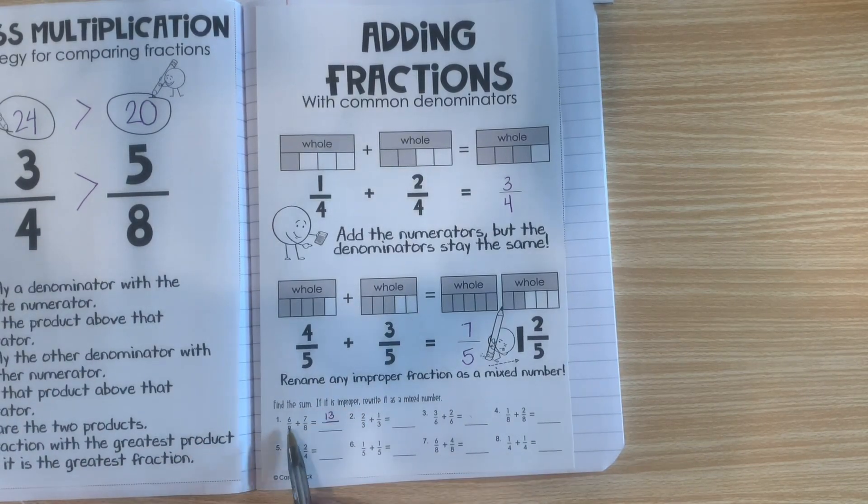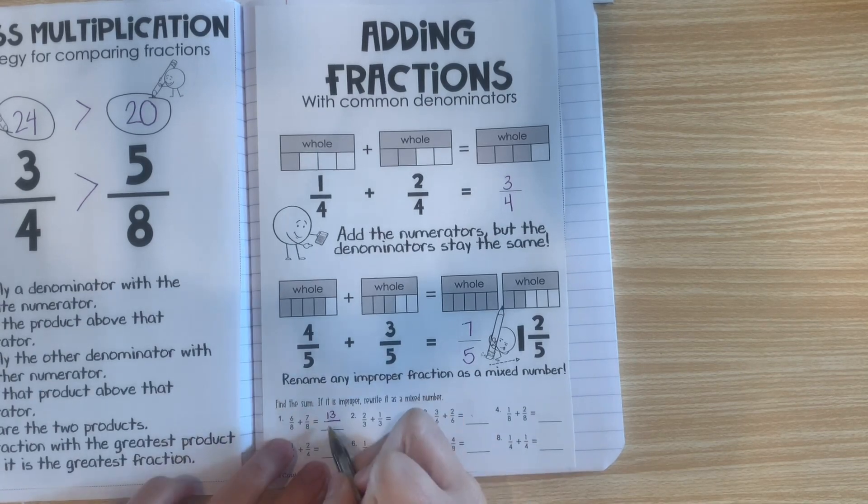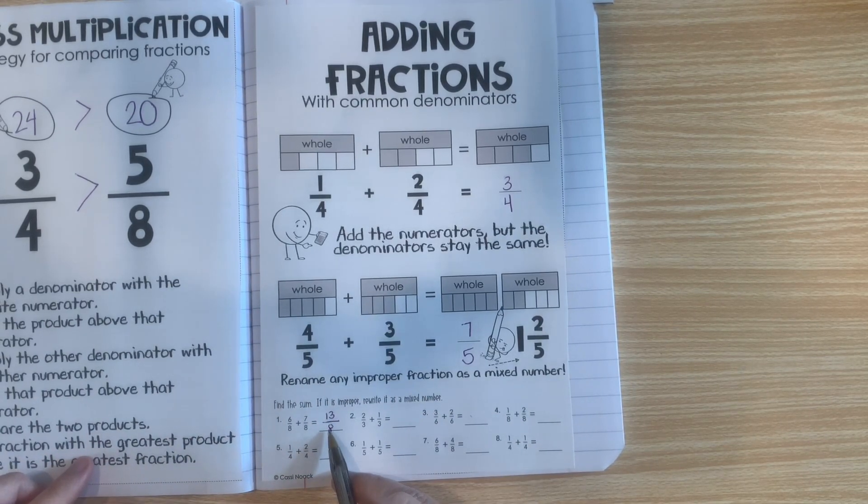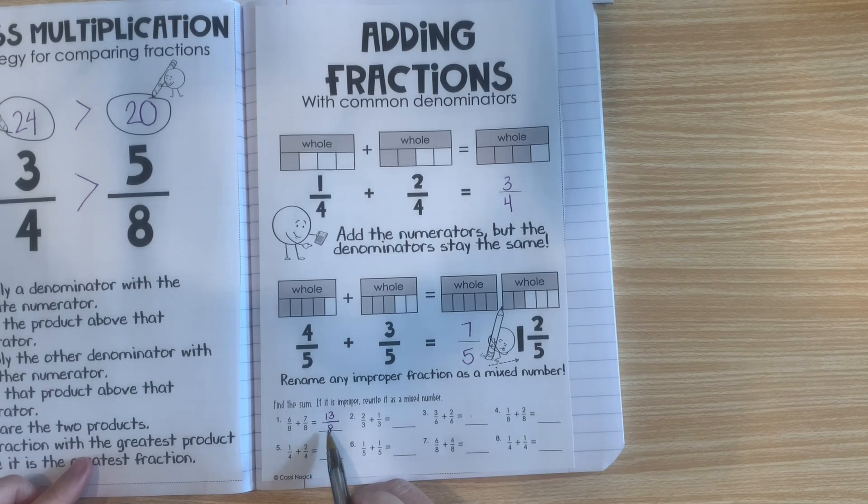Step 2 is to keep that denominator the same because there's still 8 parts in 1 of the wholes. But, now by looking at this, I can see it's an improper fraction. So, I need to do the division to find the mixed number.